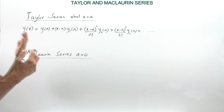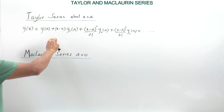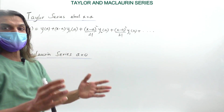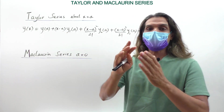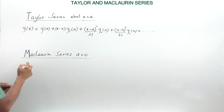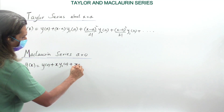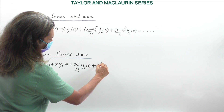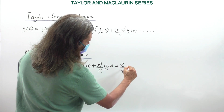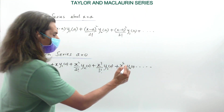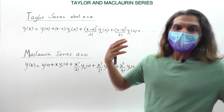Coming back to Maclaurin series, which is what the examination focuses on. Maclaurin series is a very easy series because here the expansion is about the point 0 — that is, we put a = 0. Maclaurin series is a special case of Taylor series where a = 0. So the Maclaurin series is: y(x) = y(0) + x·y₁(0) + x²/2!·y₂(0) + x³/3!·y₃(0) + x⁴/4!·y₄(0) + and so on.